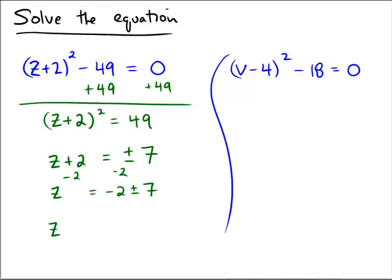And we usually do the simplification here. -2 + 7 would be 5. -2 - 7 would be -9. So we're looking at solutions of z = 5 and -9.